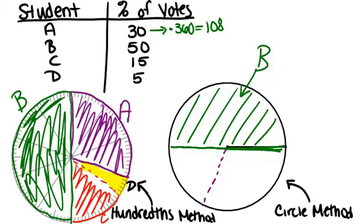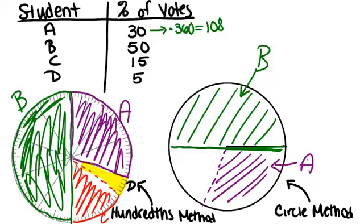You need a protractor to use this method. This is student A, and then you would do the same thing for C and D. 15% of 360 degrees is 54 degrees. You'd use your protractor to measure 54 degrees, and whatever is left should be the right amount for student D.